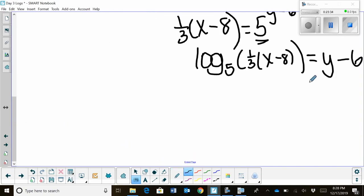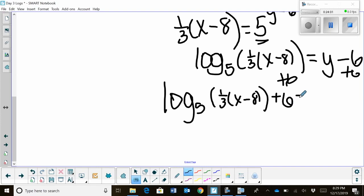So let's write log base five, and we could distribute that one-third if we wanted to, but I think it's fine just the way it is. We've got one-third times the quantity x minus eight. Then we've got to add six to get it away from the y to get the y by itself. So plus six is equal to y.